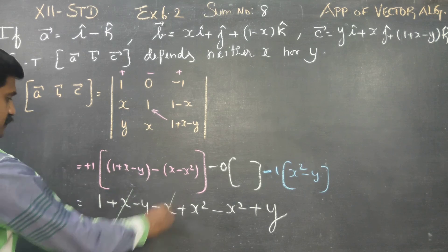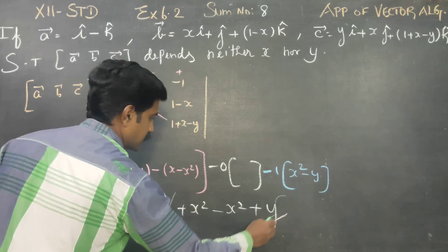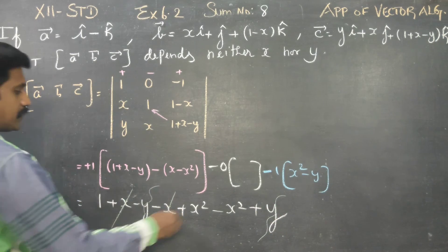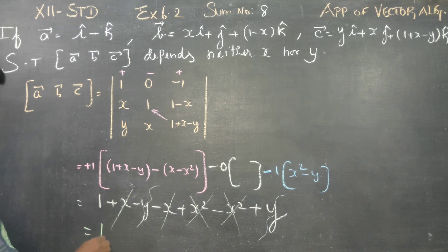And then minus y cancels into plus y. Then x square cancels into minus x square. Therefore, my answer will naturally be 1.